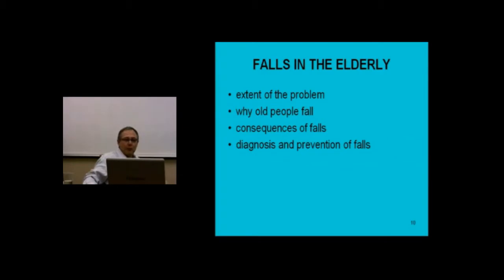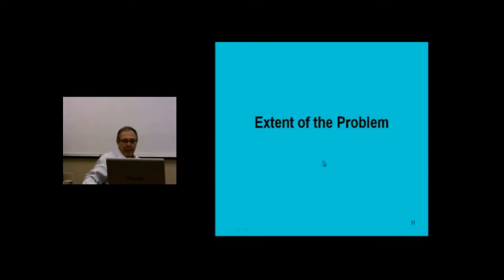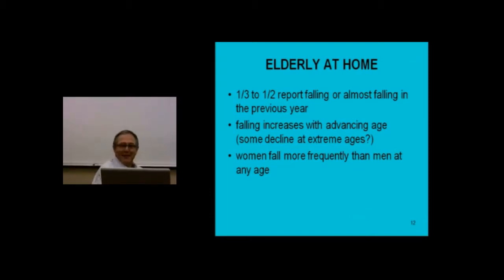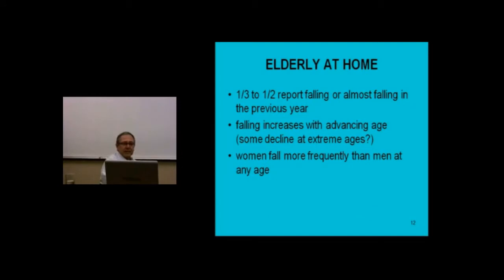Falls are a big problem. Studies go back to just after World War II — 1948 — when a British investigator, Sheldon, had research assistants go door to door in geographic districts. Every house with somebody over age 65, they knocked and asked: have you fallen or almost fallen in the last year? People will forget some episodes, so it's an underestimate, but it's consistent. Every study since then has suggested a third to a half of people will fall or almost fall within a year. Most of these studies are on people over age 65, and the older you get, the more likely you are to fall.